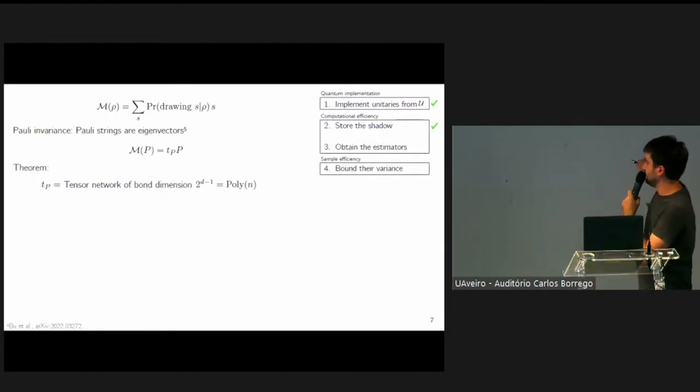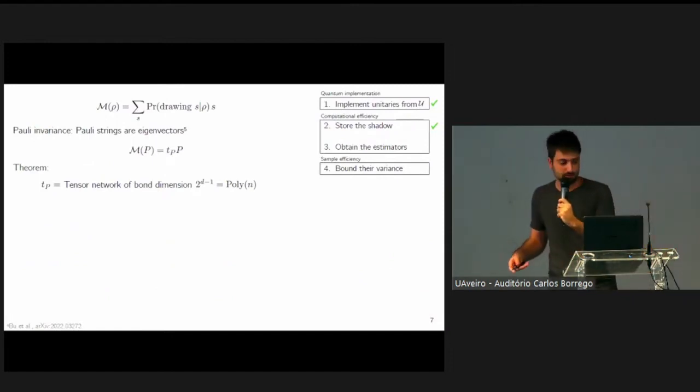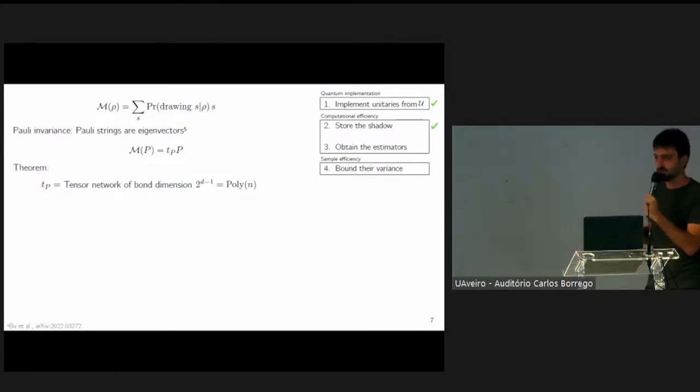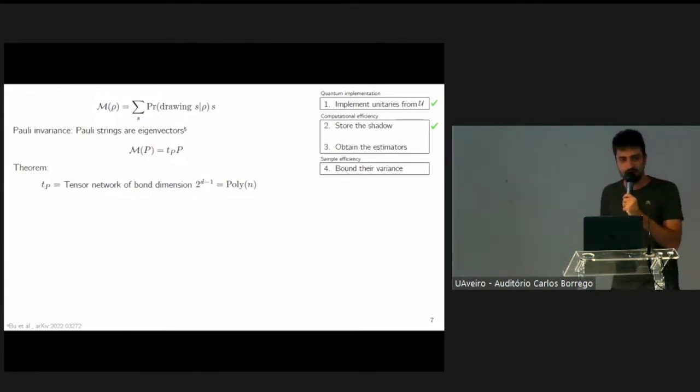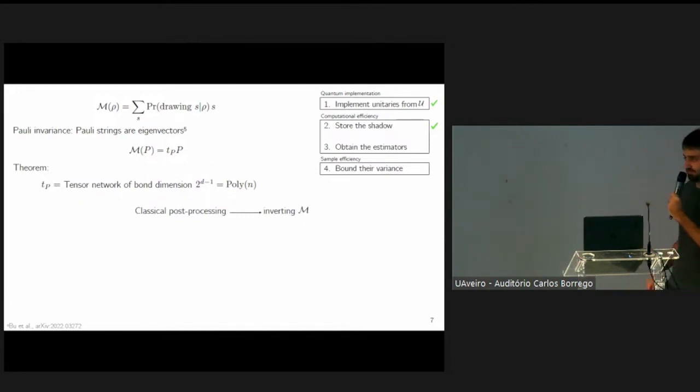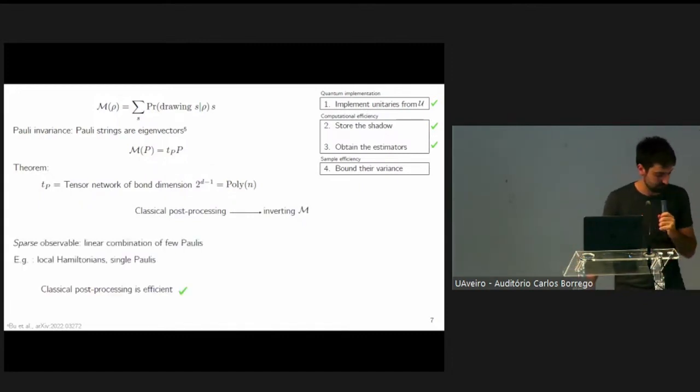So this takes care of point one and two, but now we still have to do this classical post-processing, which is possible in the Huan, Kyung, and Preskill paper because of the group structure. Here we have no group structure. This classical post-processing is all about inverting this quantum channel. It was shown by Boo and co-authors that for a very large class of ensembles called Pauli invariant ensemble, this quantum channel is actually diagonal in the Pauli basis. But furthermore, we show that in our case, we find an exact expression for the eigenvalues, which can be computed efficiently using tensor network contractions. It's not quite enough. We need still to invert this channel.